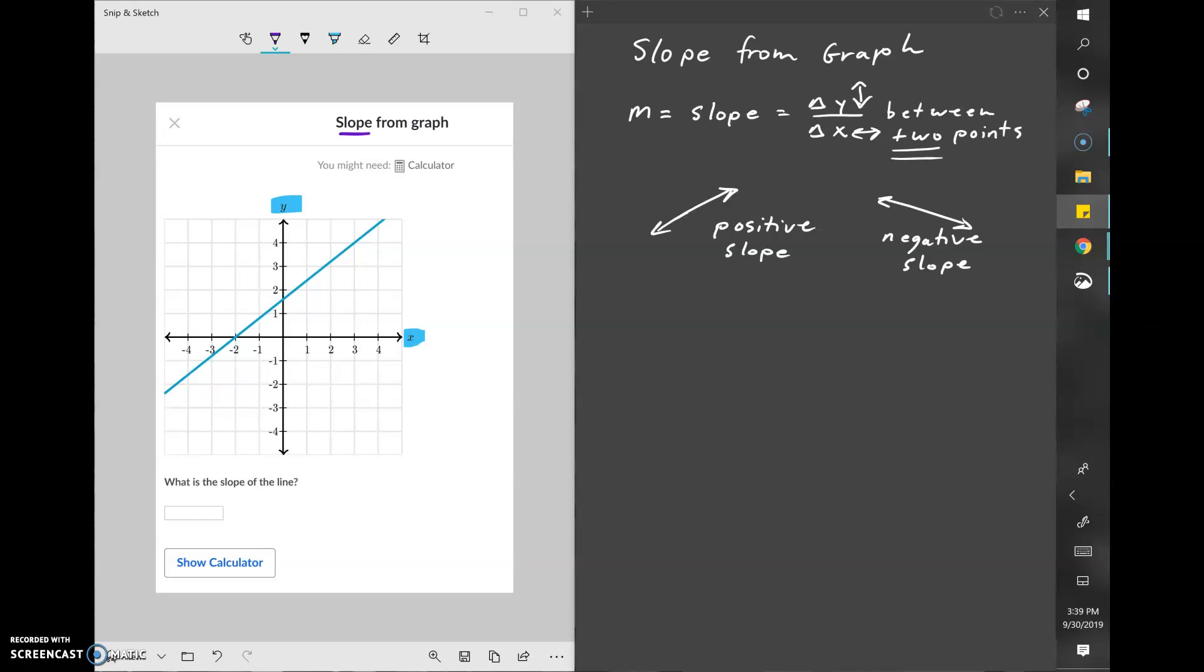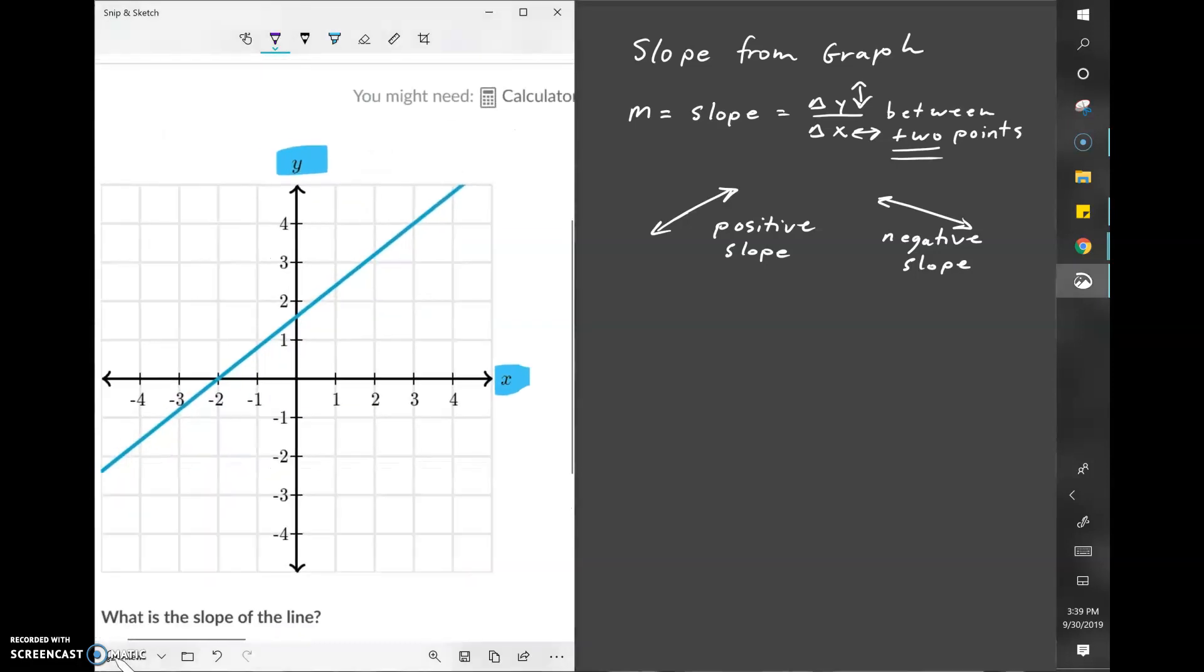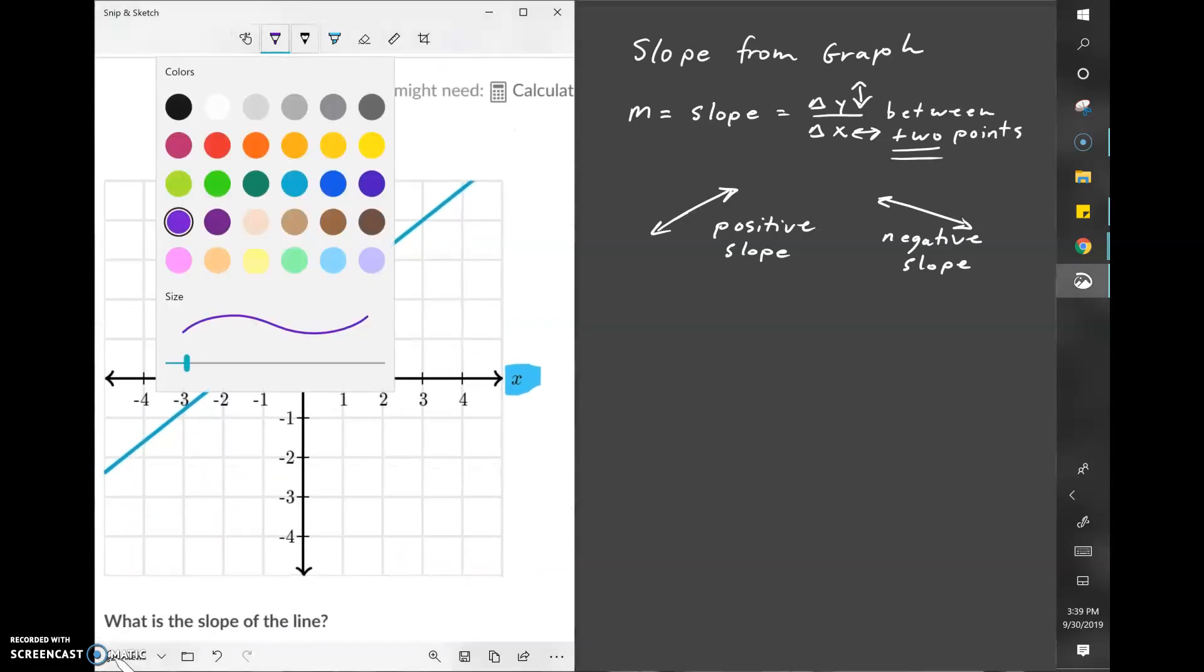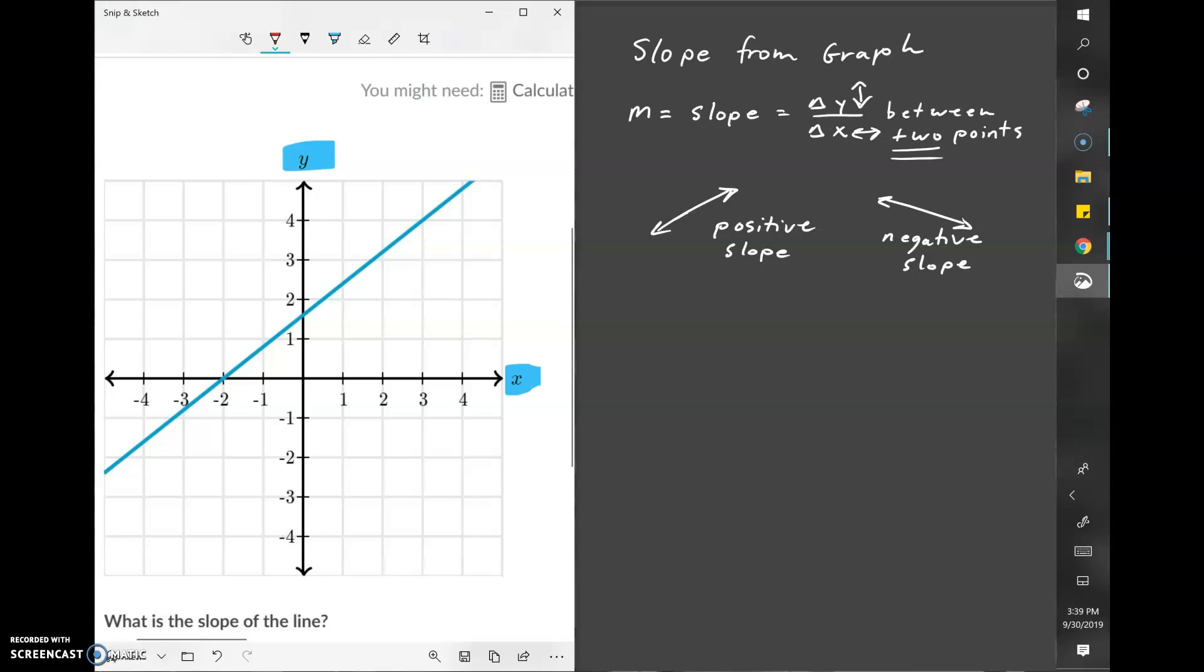We need two points to do this. You can't calculate the change unless you have at least two points. So the first step here would be to identify two points that we can use. We're looking for where this blue line goes through the corner of a square. It goes through the corner of a square right there. It doesn't go through the corner right there, that's why we can't use it. We can't deduce the coordinates. It just misses it right there and it goes to the corner right here.